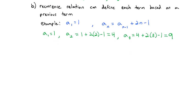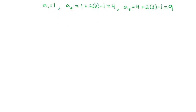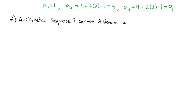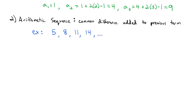There are a couple of sequences that are very important to us. The first is the arithmetic sequence, where we have a common difference added to the previous term to get the next one. For example: 5, 8, 11, 14. There's a common difference of 3 being added each time — 5 plus 3 is 8, 8 plus 3 is 11, 11 plus 3 is 14.